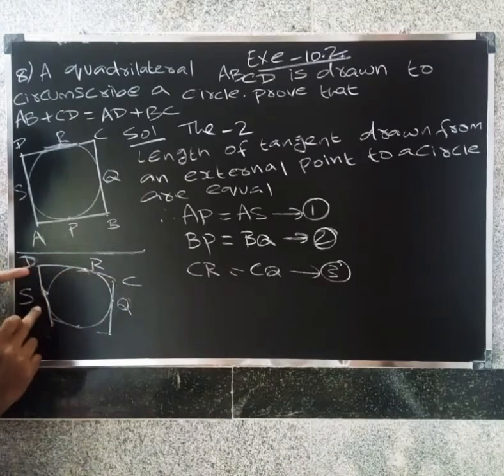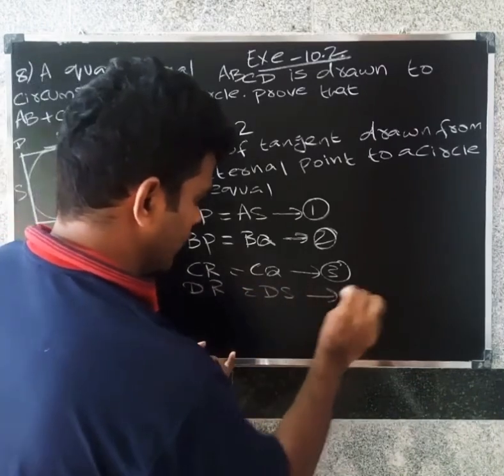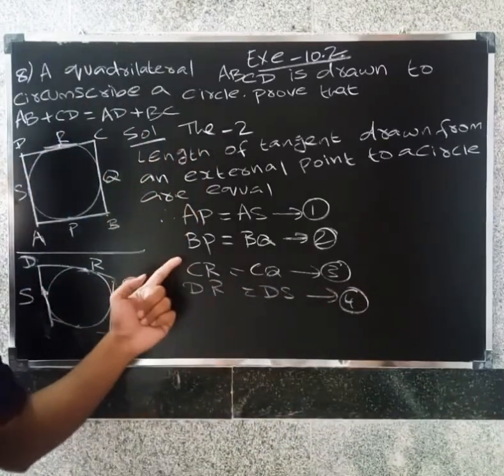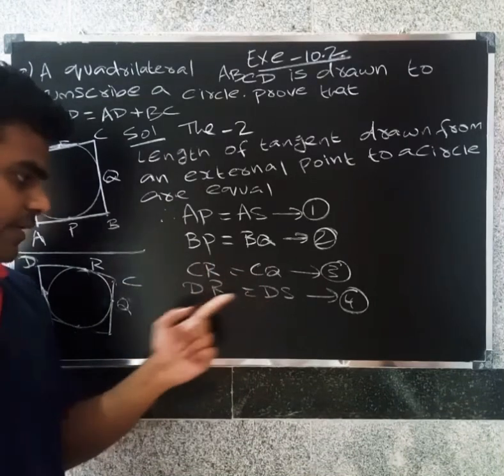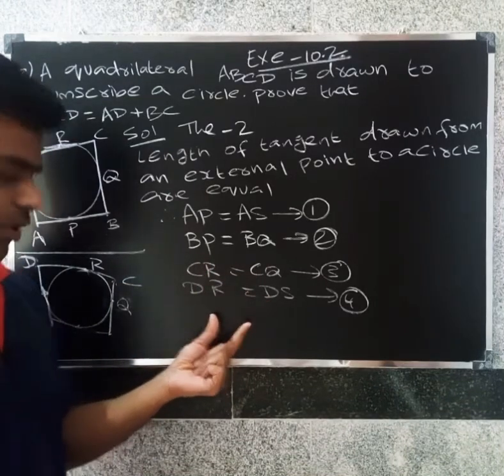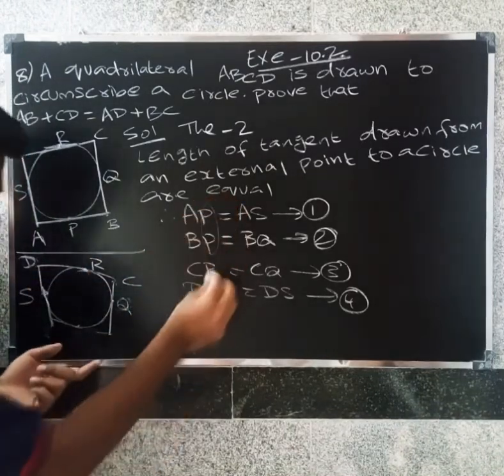From point D, the tangents are DR = DS. So we have CQ = CR and DS = DR. Now we can add these equations together.